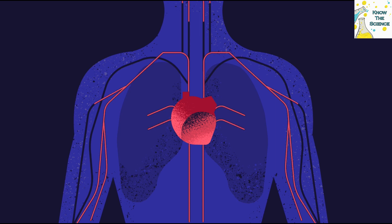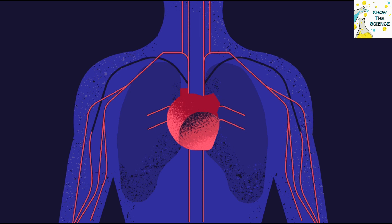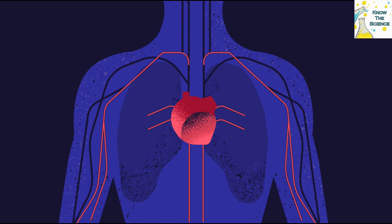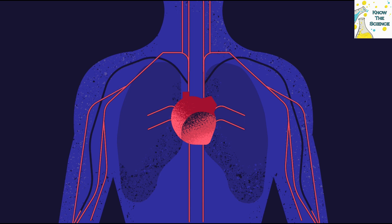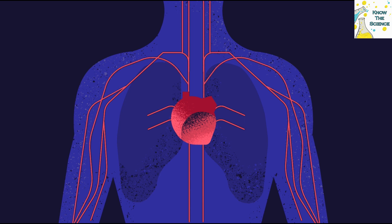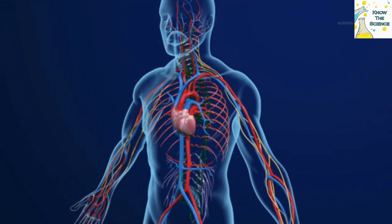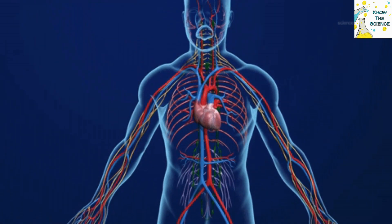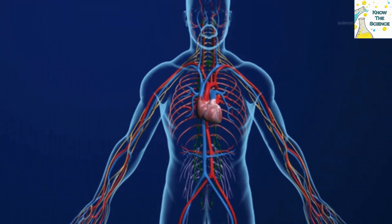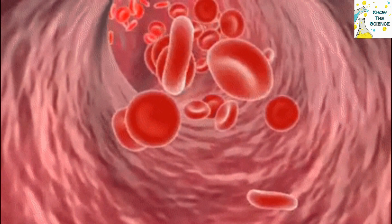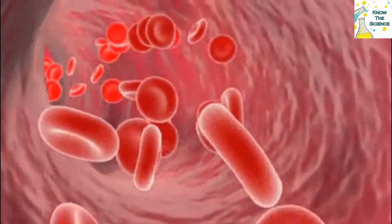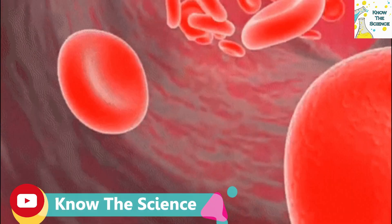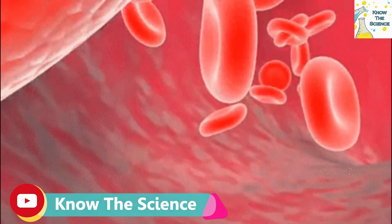The tube which carries blood throughout the body is known as a blood vessel. Our body has a network of channels called blood vessels. Blood vessels circulate blood throughout the body and help keep the blood flowing to and from the heart. Various kinds of blood vessels are found in our body.